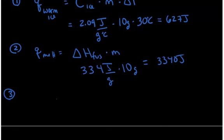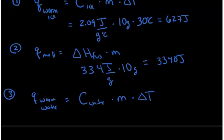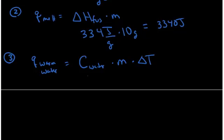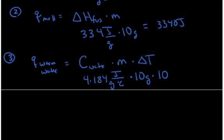Step three is warming the liquid water. That's equal to the specific heat of water times mass times change in temperature. The specific heat of water is 4.184 joules per gram per degree Celsius — this is actually the definition of a calorie, the amount of energy it takes to raise one gram of water by one degree Celsius, which equals 4.184 joules. We have 10 grams of water and we raise the temperature 100 degrees from zero to the boiling point, giving 4,184 joules for that step.